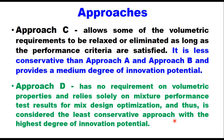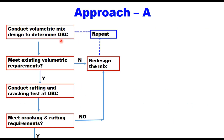I will explain each approach with its stepwise procedure. Approach A starts with the current volumetric mix design method — it can be the Marshall method or Superpave — to determine aggregate gradation and optimum binder content for a given layer thickness. If the mix meets the existing volumetric properties, we proceed to the next step. If it does not meet volumetric requirements, we redesign the mix by changing the gradation, the asphalt, or both, and even the material can be changed.